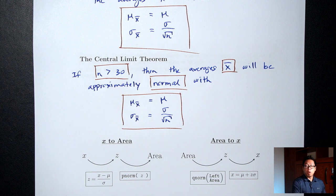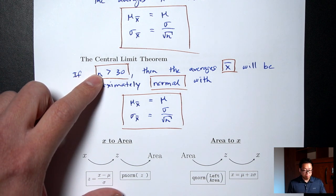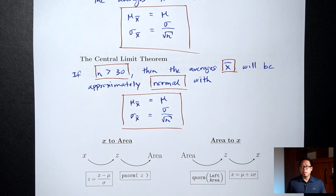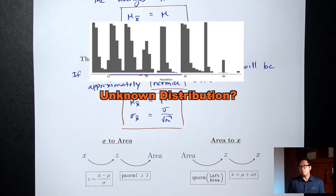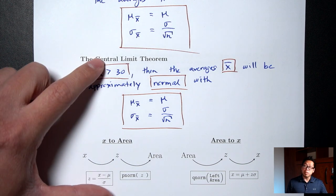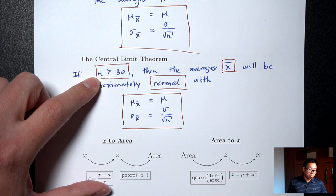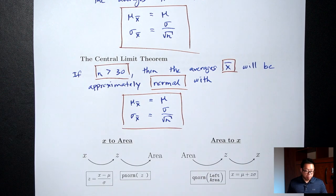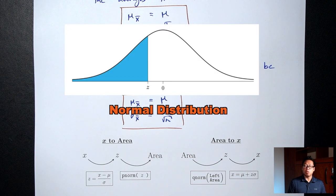This answers the question from the beginning of the lecture: what do you do when your distribution is not normally distributed? As long as you pick a sample size bigger than 30 and look at the averages, the distribution will be normal. Most of the time in statistics we don't know what the population distribution looks like, and the Central Limit Theorem says: who cares? As long as n > 30 and you look at the averages, the distribution will be normal — that's why the normal distribution is so important.